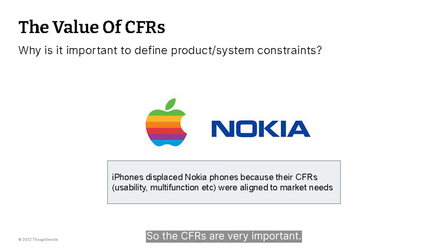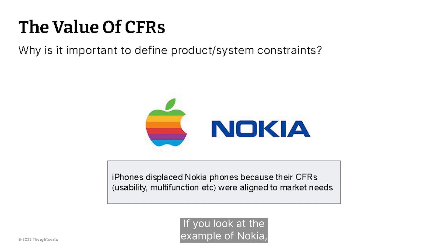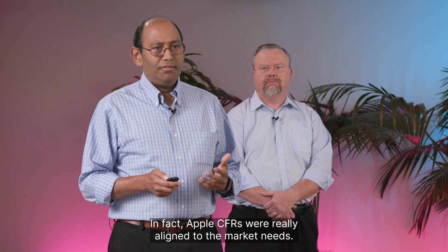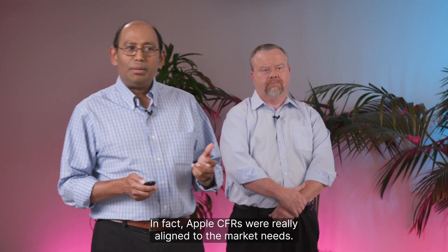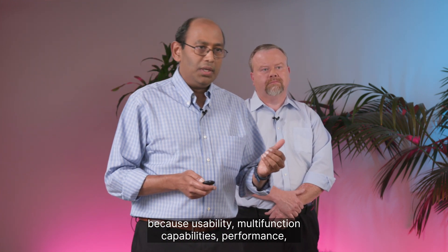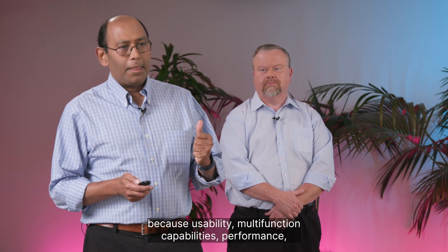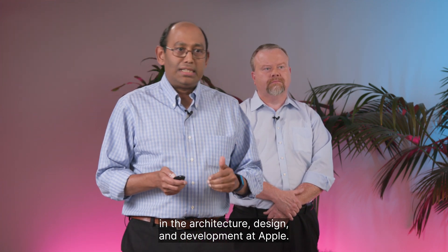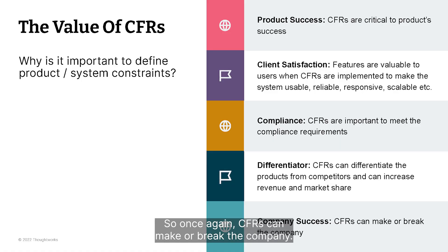CFRs are very important — they can make or break the company. If you look at the example of Nokia, they used to be the number one cell phone handset maker in the world. But when Apple came in, they displaced Nokia because of usability and multifunction capabilities. Apple's CFRs were really aligned to the market needs — usability, multifunction capabilities, performance, and reliability are considered very important in the architecture design and development at Apple. So once again, CFRs can make or break the company and are critical to the success of the product.